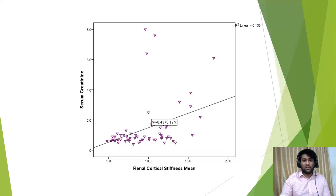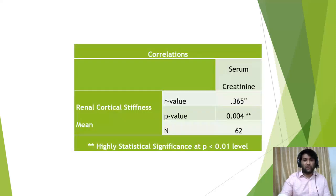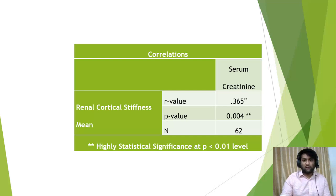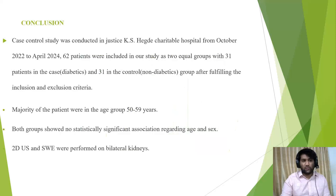Here is the Pearson correlation graph between serum creatinine and renal cortical stiffness. Using the Pearson correlation test, the p-value was 0.004, which is less than 0.01, showing a highly positive and statistically significant correlation between the two values.